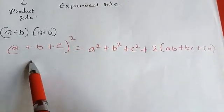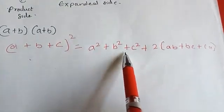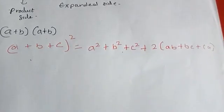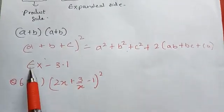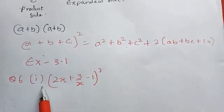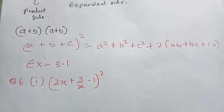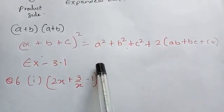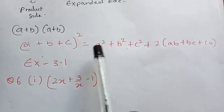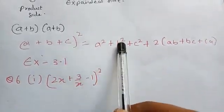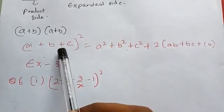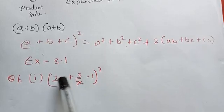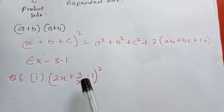Sometimes a question comes in expanded form and you change it to product form, or vice versa. We'll look at Exercise 3.1, Question 6, first part. This question has three terms with a square power, so it matches the (a + b + c)² formula. I need to identify a, b, and c: a is 2x, b is 3/x, and c is −1.